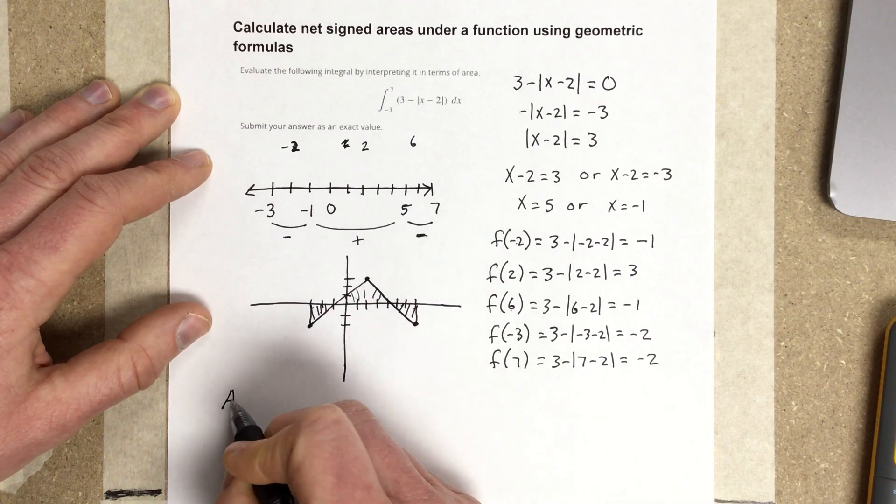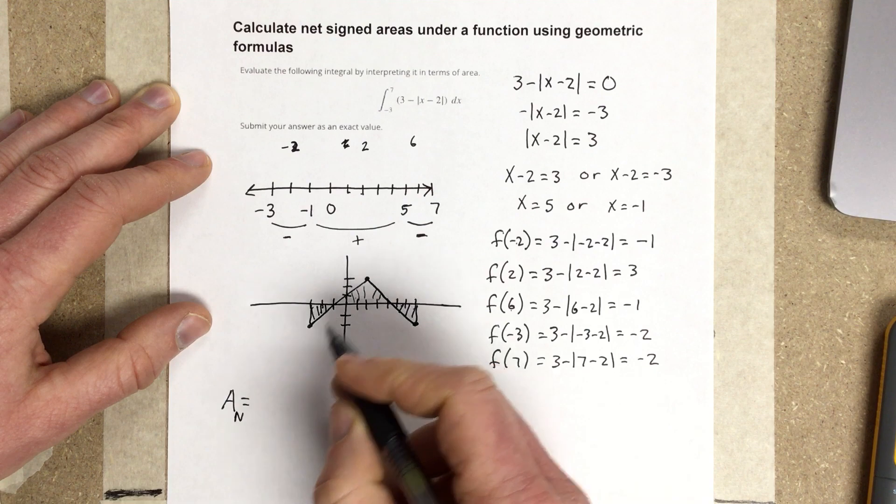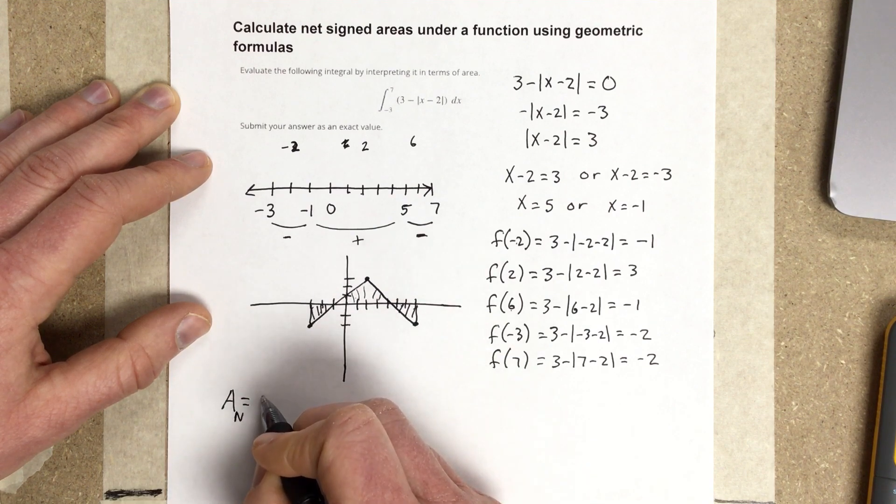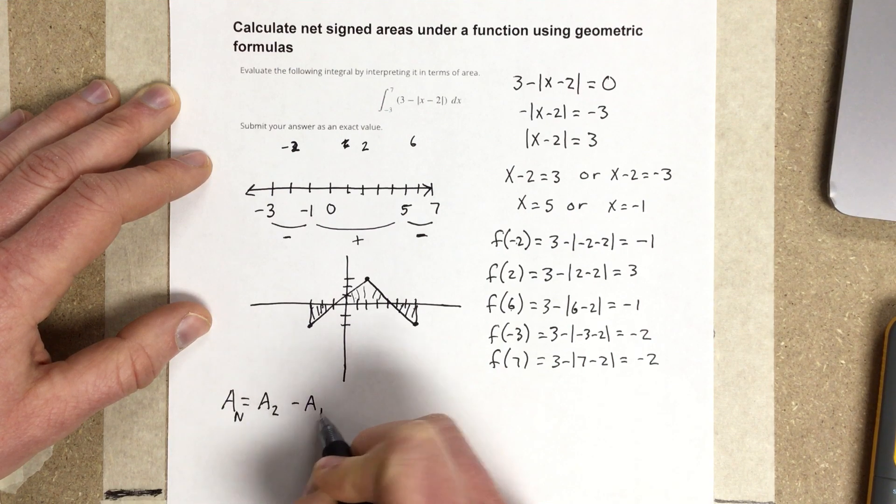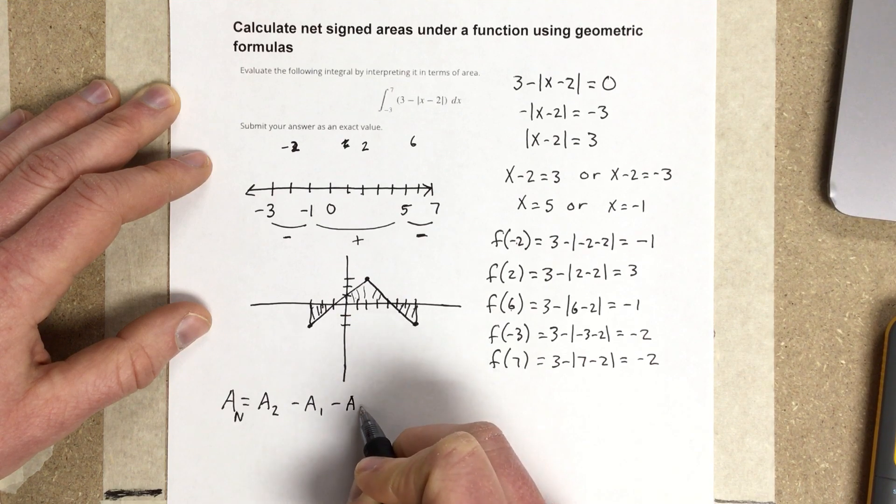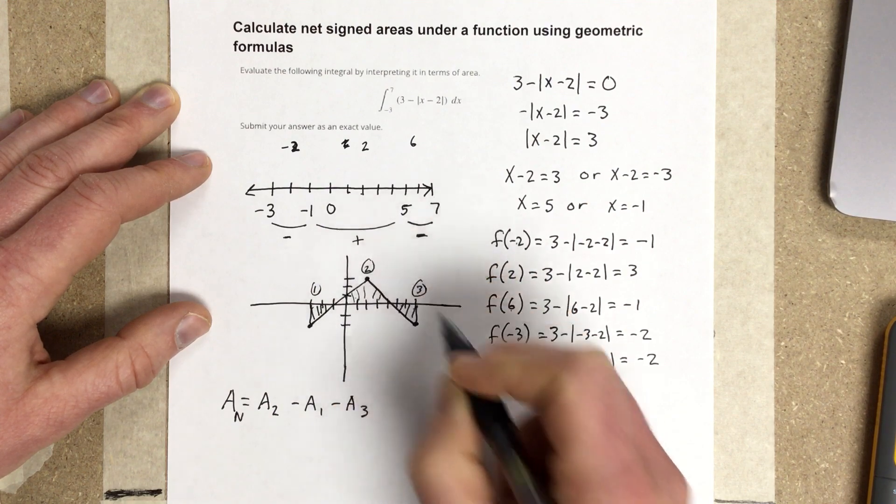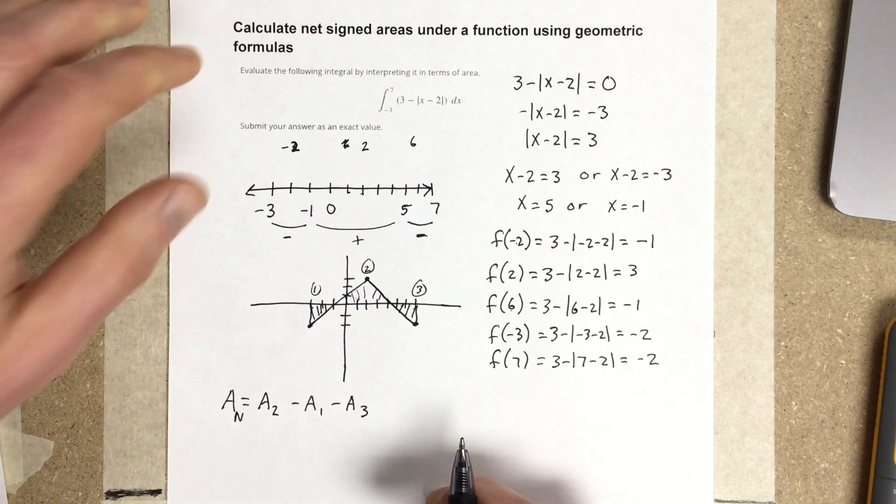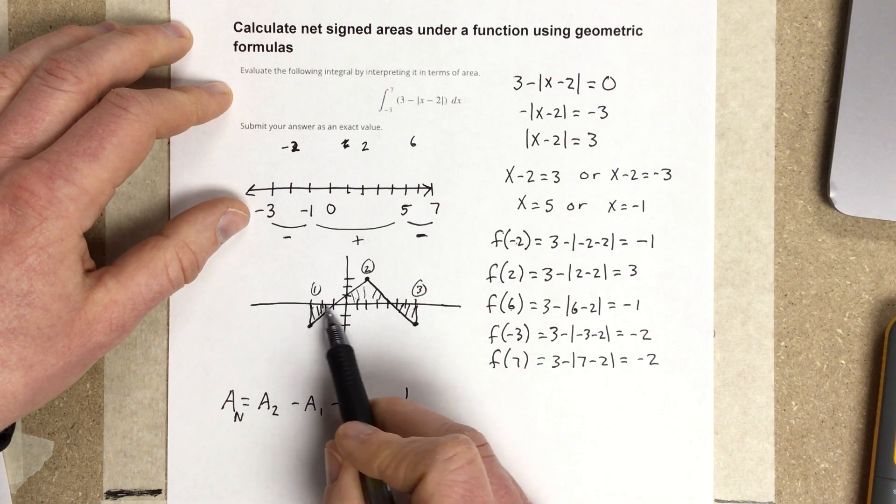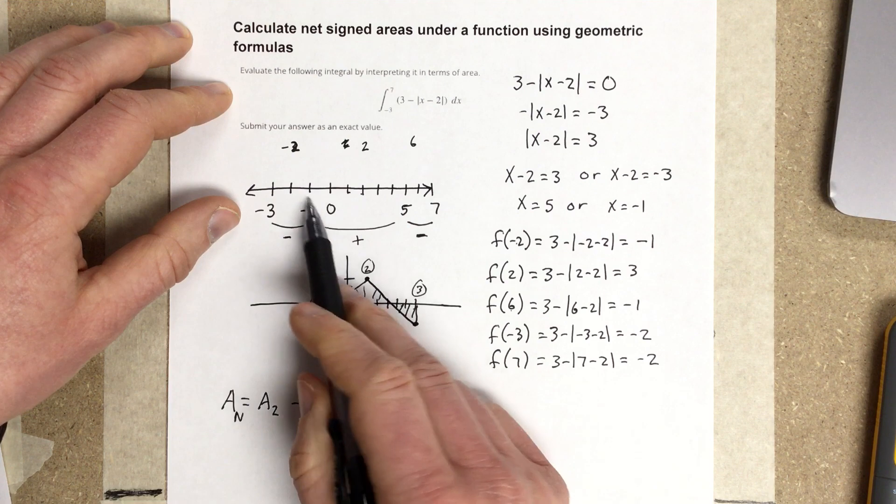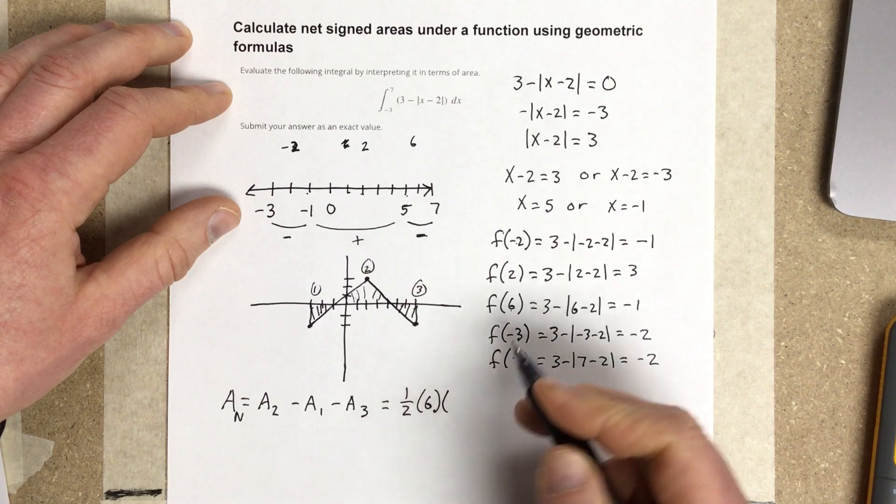Now, what's the areas for our triangles? So, I know the net area is going to be triangle 2. So, I'm going to say area of 2, which is positive, minus area of 1, minus area of 3. And, I'm going to name this 1, 2, and 3. So, if I do the base times height here, for each of those, 1 half base times height, I'd get 1 half. The base for this area 2 goes from negative 1 to 5, which would be 6. And then its height was 3.